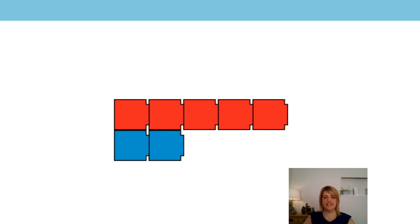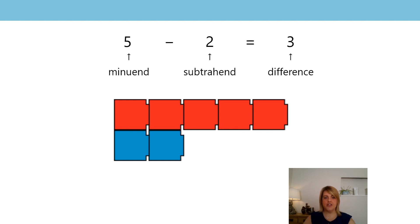Let's have a look at another example. This time I've got five red cubes and two blue cubes. What's the difference between the red and the blue cubes? The minuend is five, the subtrahend is two, and therefore the difference is three. We can see that the difference hasn't changed. Last time we had four red cubes and one blue cube and the difference was three. This time we've added one to the minuend and one to the subtrahend, so we've got five minus two, but the difference is still three.